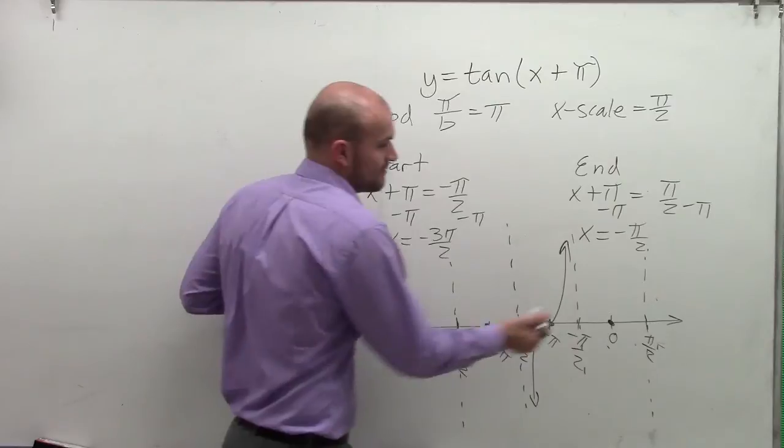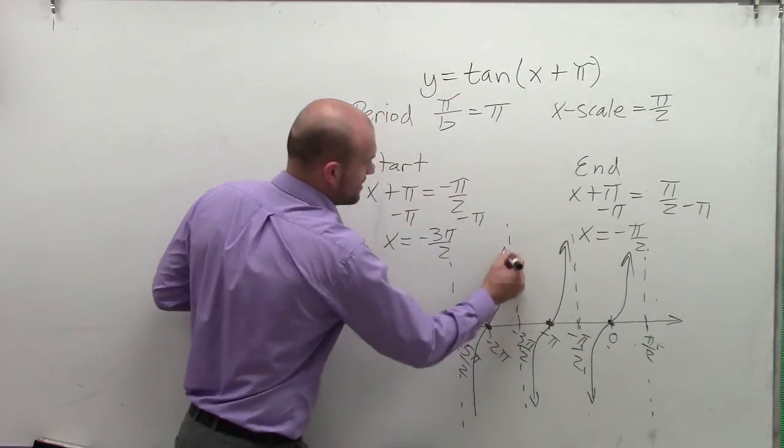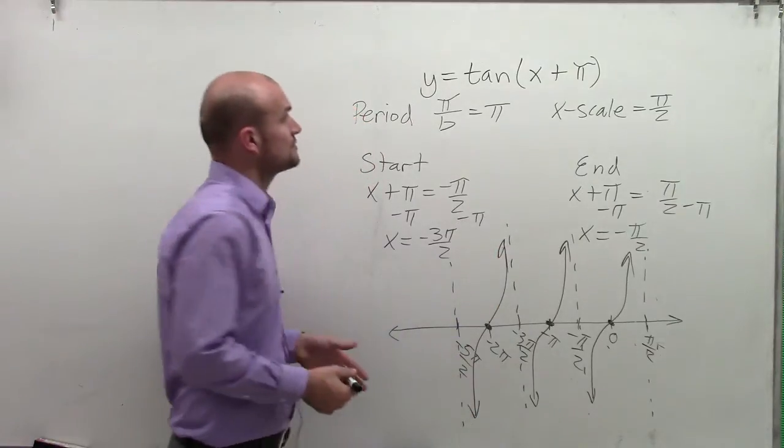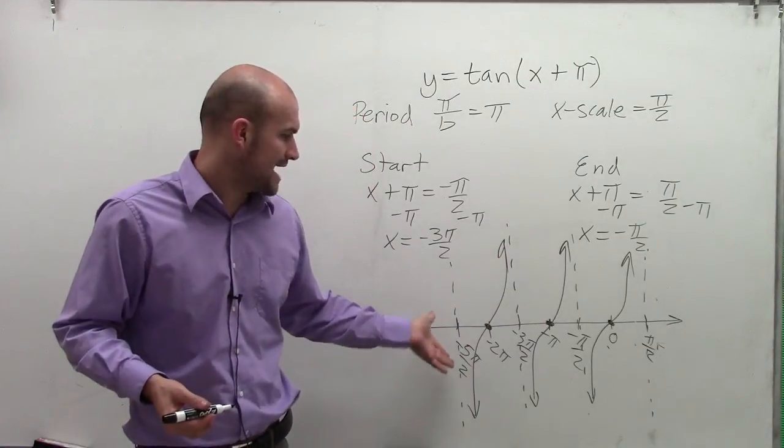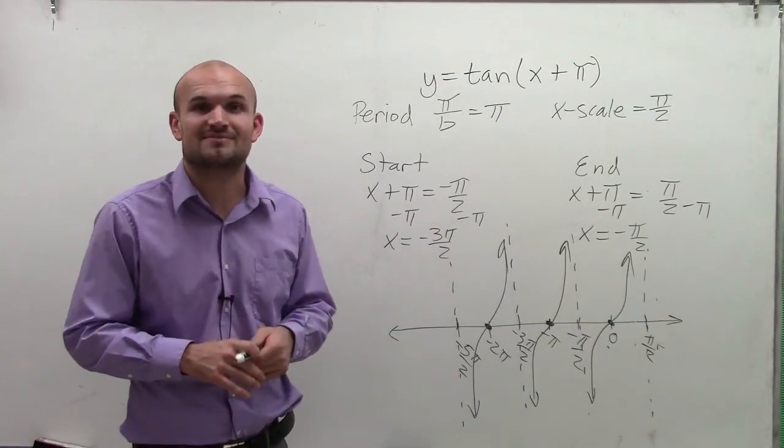Now what you can just continue doing is continue that. I'll do it for three periods here as my graph is going to approach my asymptote from the left and from the right. So there you go, ladies and gentlemen. That's how you solve the tangent function. Thanks.